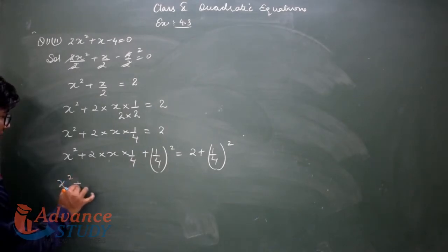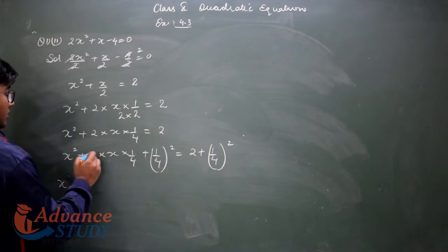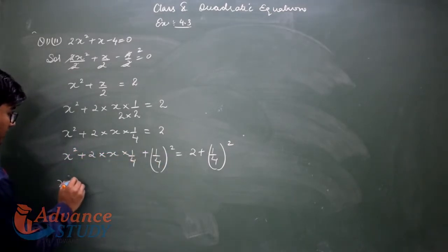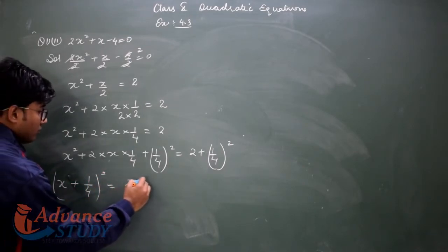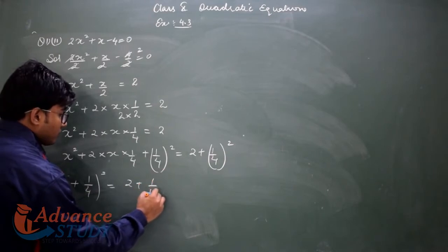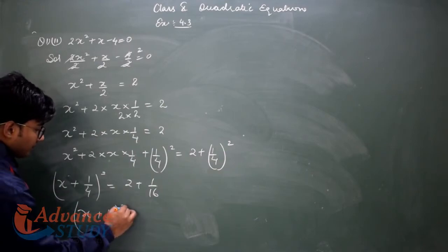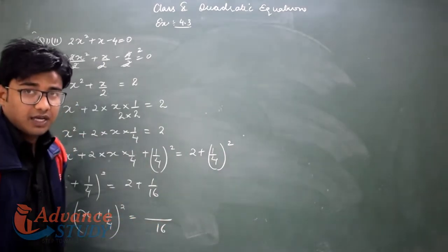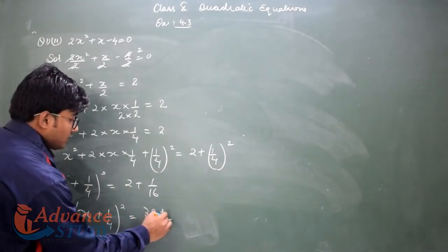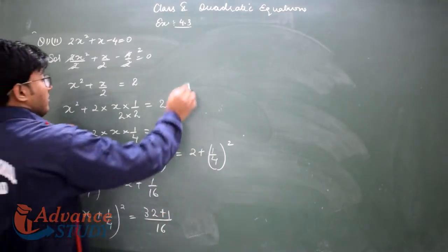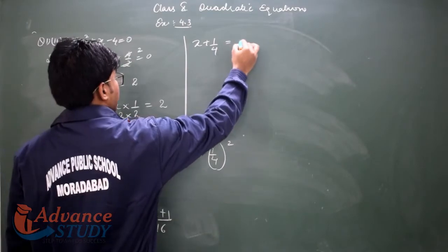Using the formula a² + 2ab + b² = (a+b)², we get: (x + 1/4)² equals 2 + 1/16. Taking LCM as 16: 16 times 2 is 32, plus 1, so 32 + 1 = 33. Therefore (x + 1/4)² equals 33 upon 16.